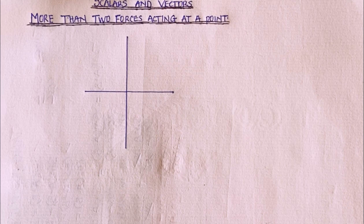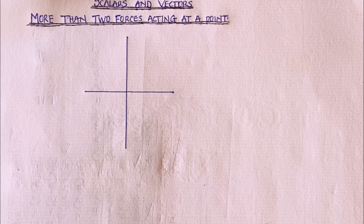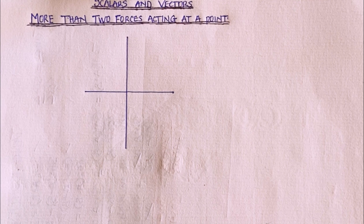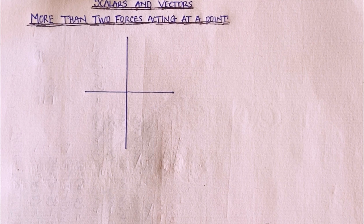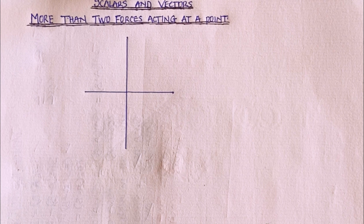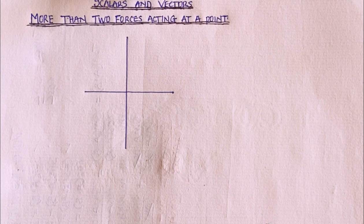Welcome to physics class. In this video, we're talking about scalar and vector quantities. Specifically, we are going to check more than two forces acting at a point. If you haven't watched my previous video on two forces acting between 0 and 90 degrees (acute angle) and between 90 and 180 degrees (obtuse angle), kindly pause and go back to watch that video. In this video, I will be talking about what happens when you have more than two vectors acting at a point.